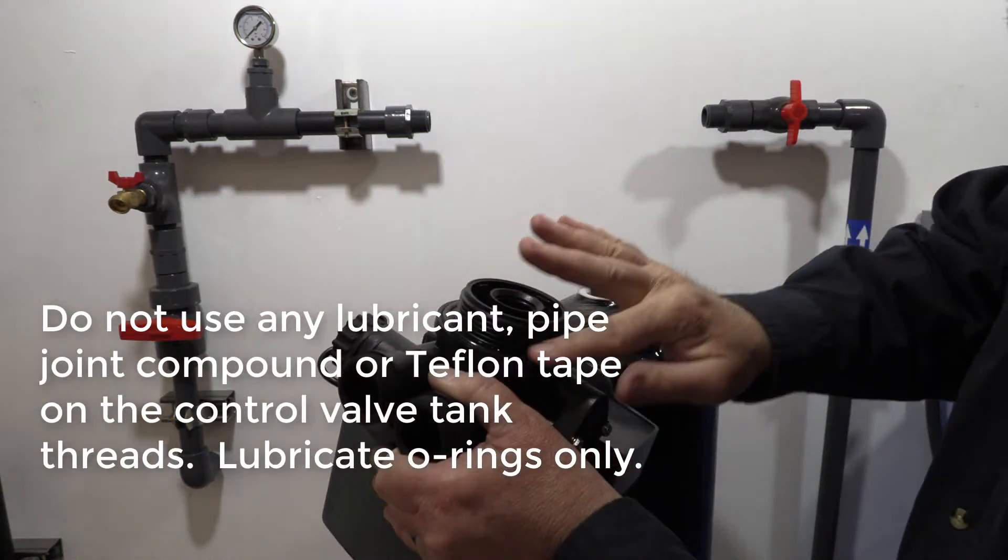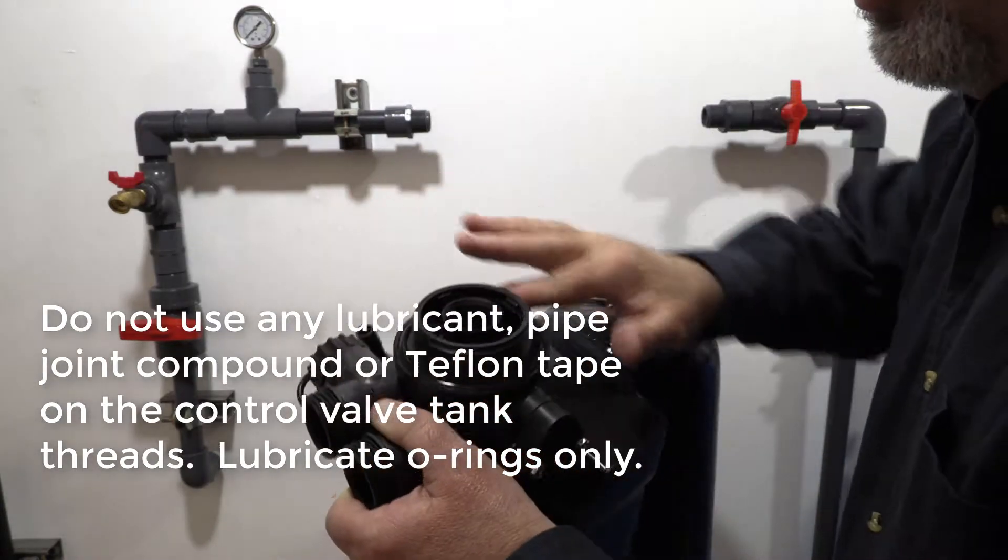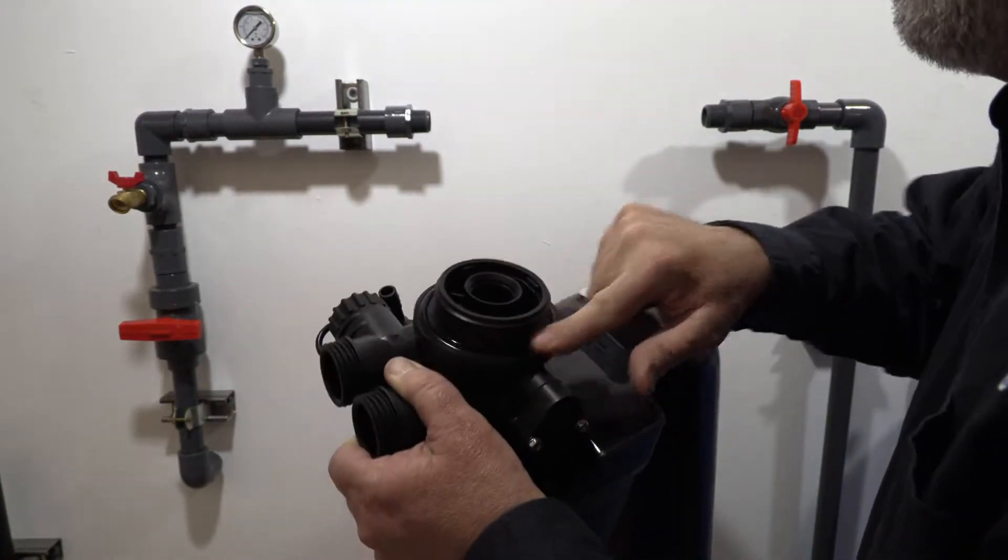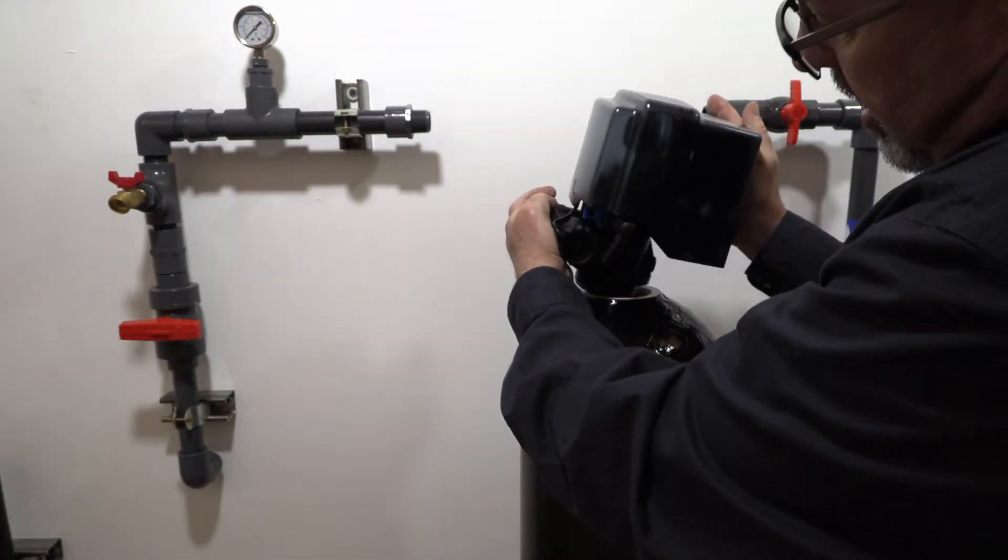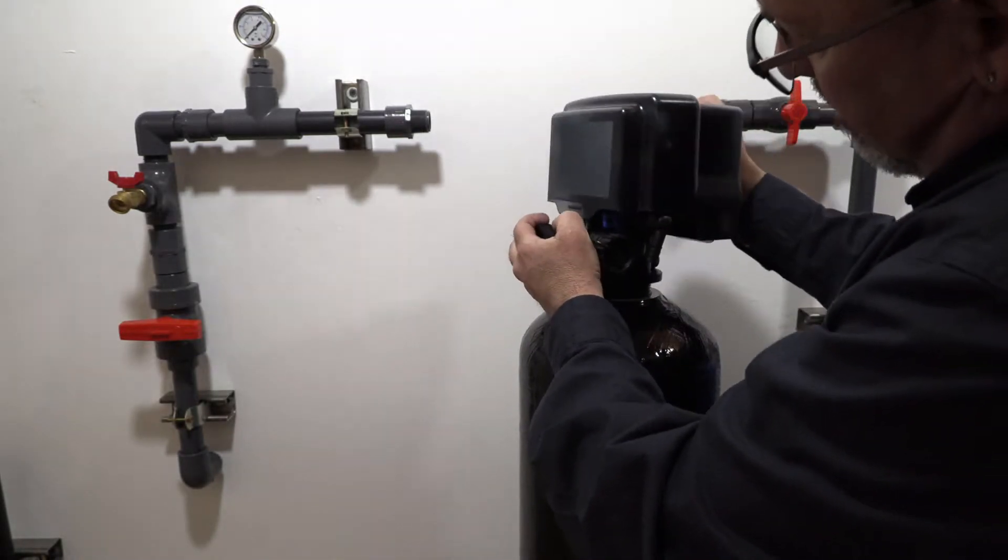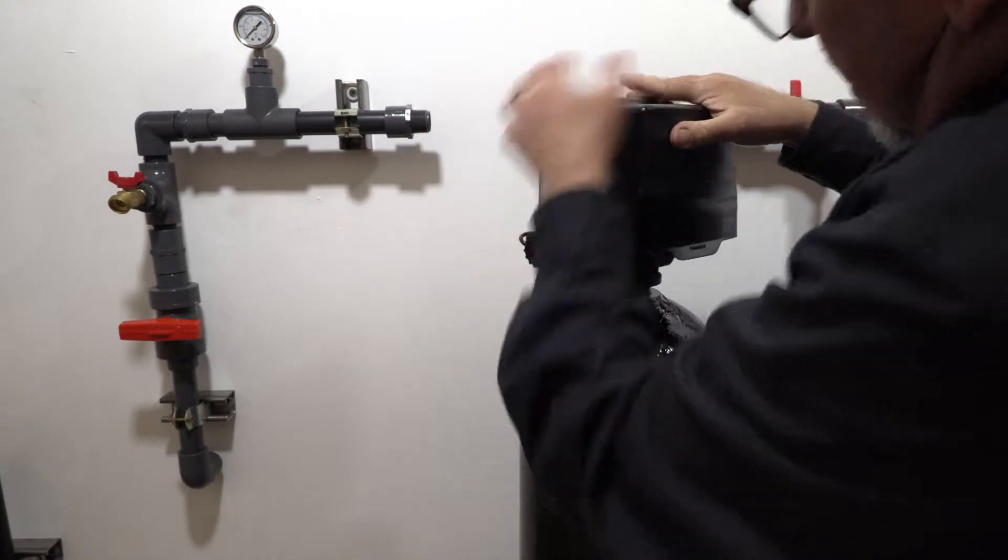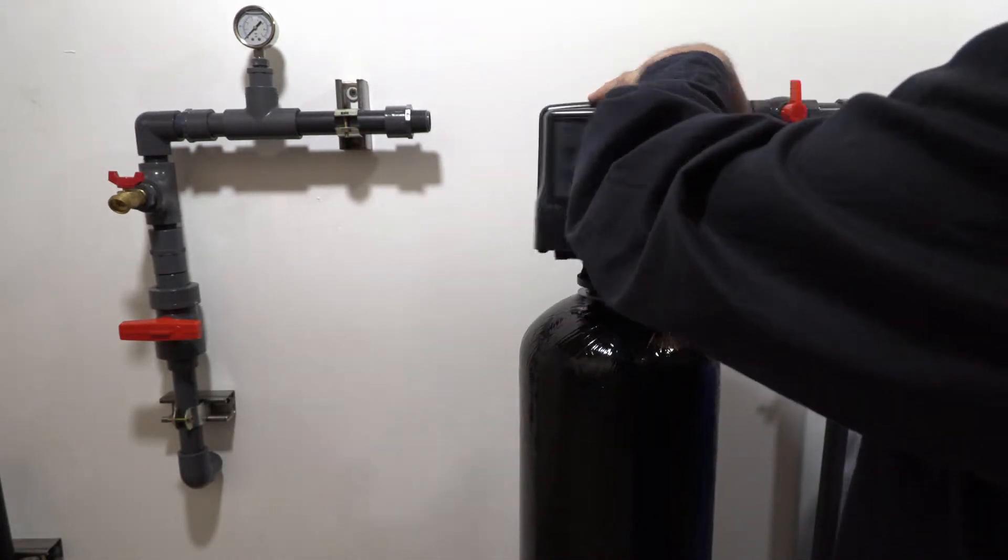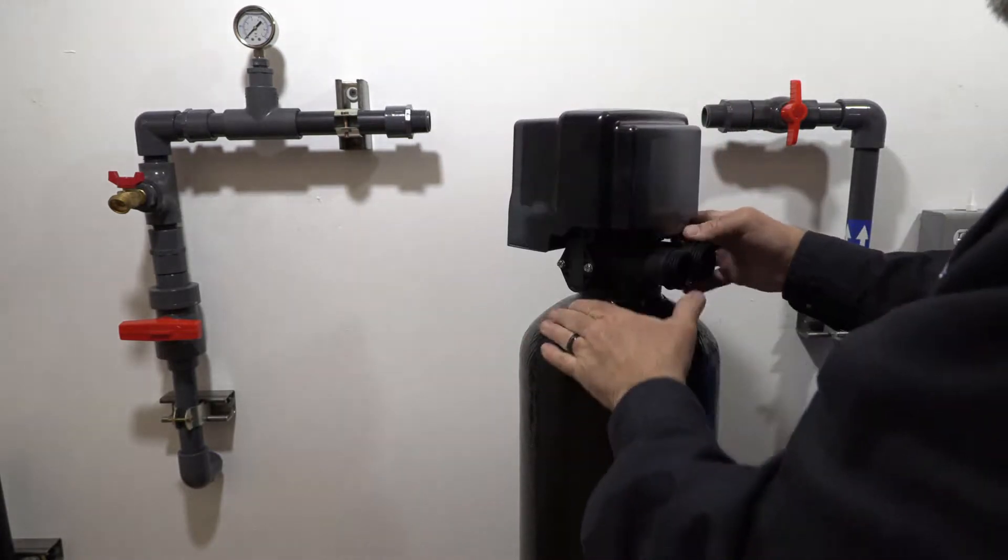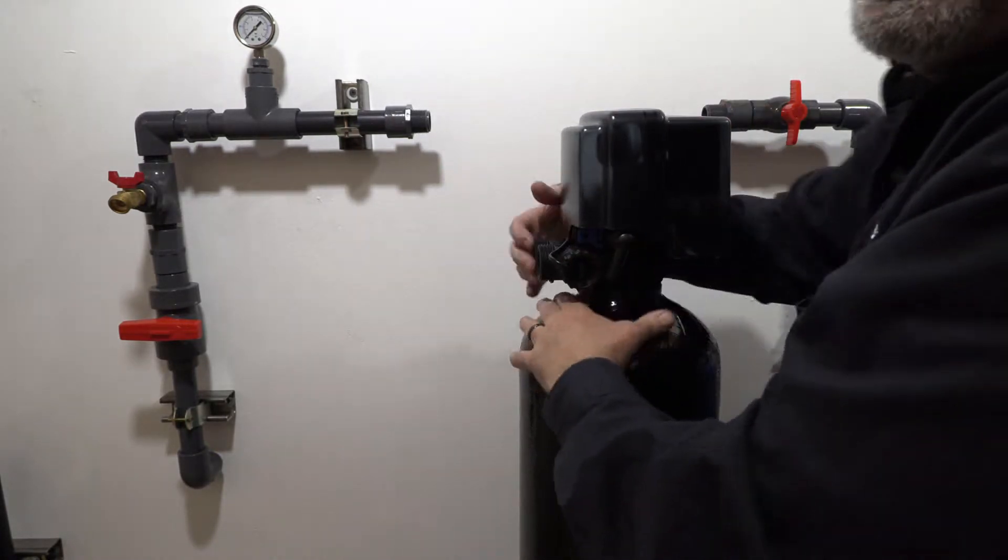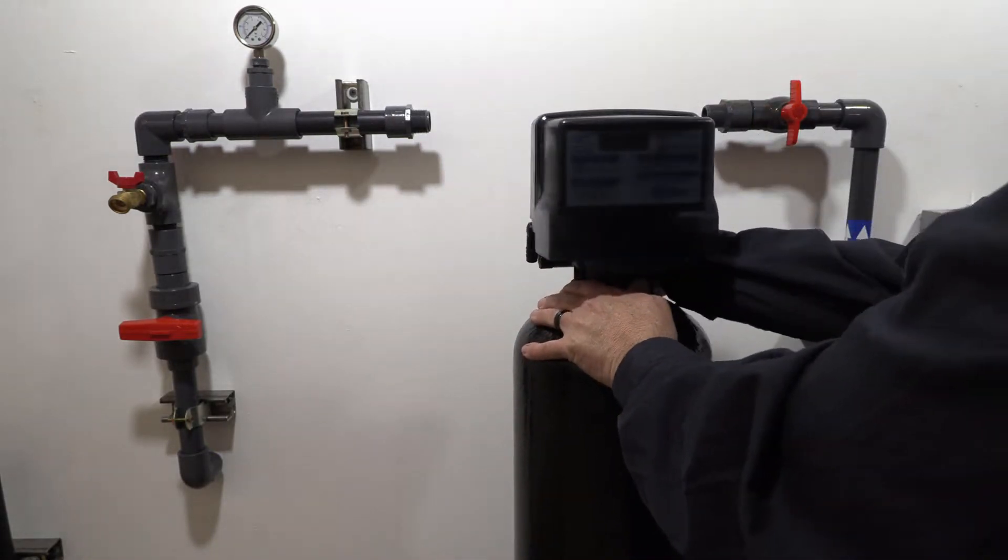You want just a nice little film of this lube all around on the o-ring. Then carefully install this, feed the D-tube up in there, and thread your valve on. It's important: don't use a strap or any kind of wrench on this. Hand-tight is all you need to seal that o-ring.